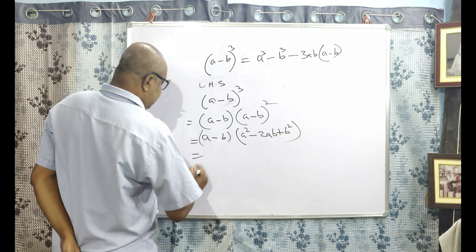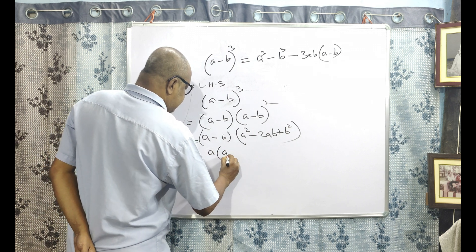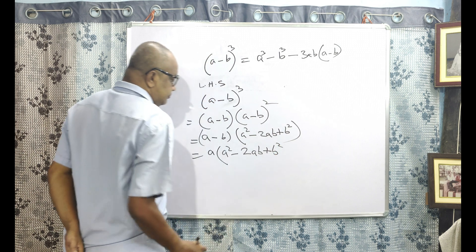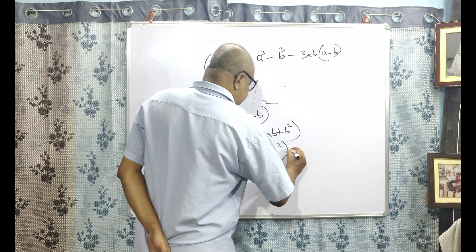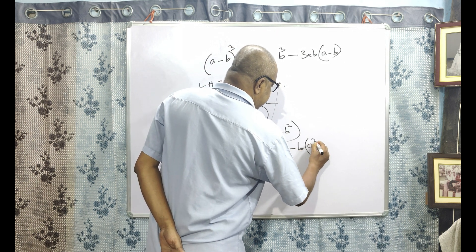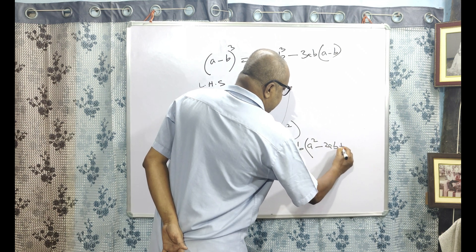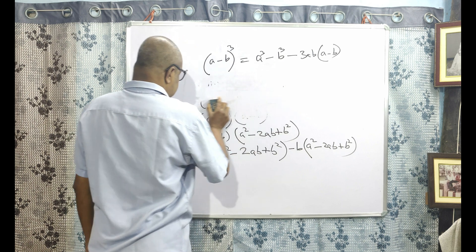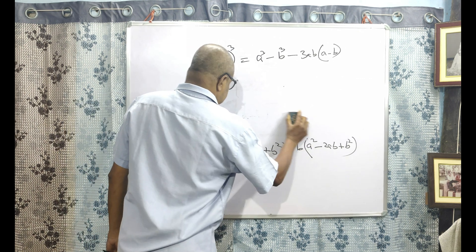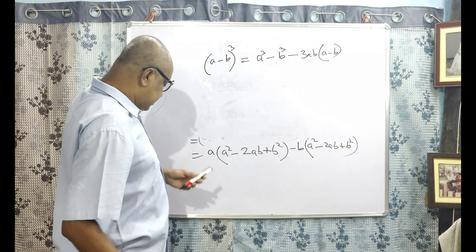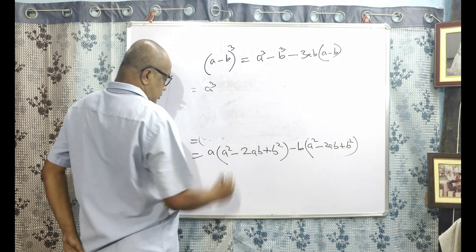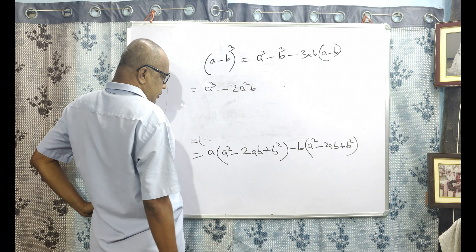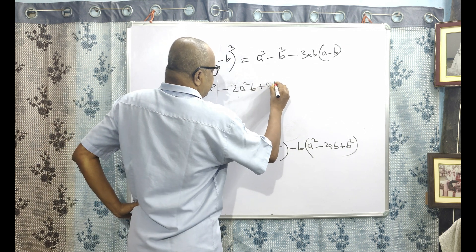So this is A into A square minus 2AB plus B square. Ultimately, this is equal to A cube minus 2A square B plus AB square.